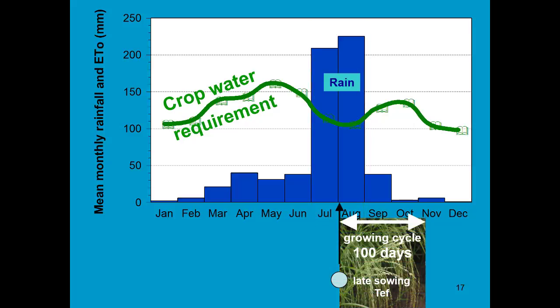However, the crop is rather late sown, at the end of July, beginning of August.